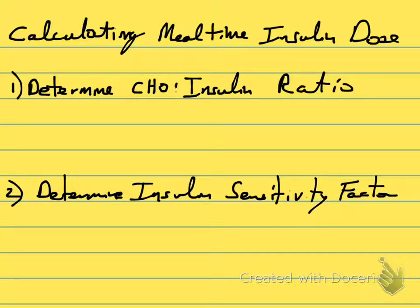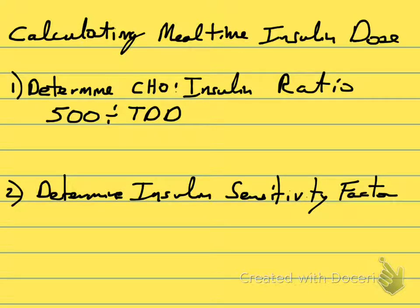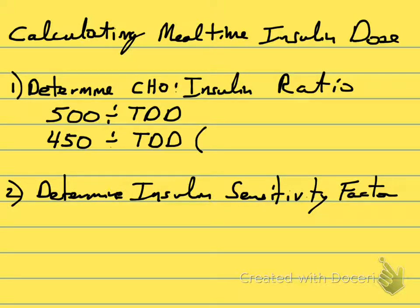There are two different rules. The first rule is the 500 rule: take 500 and divide it by your total daily dose of rapid-acting insulin. If somebody is using regular insulin, we use a different number — that's 450 divided by your total daily dose. That applies only if someone is using regular, not rapid-acting insulin.